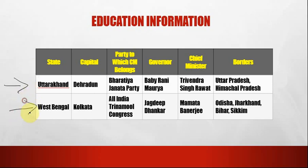The next state is West Bengal. The capital of West Bengal is Kolkata. The party to which the CM belongs is All India Trinamool Congress. The governor is Jagdeep Dhankhar. The chief minister is Mamata Banerjee. The borders are Odisha, Jharkhand, Bihar and Sikkim.